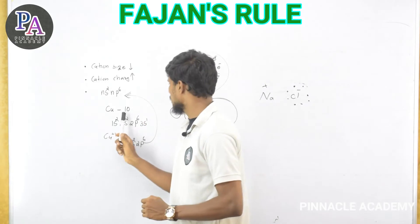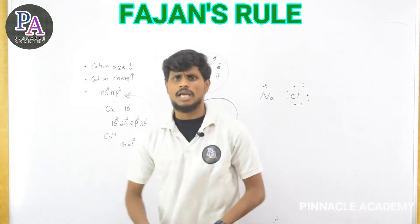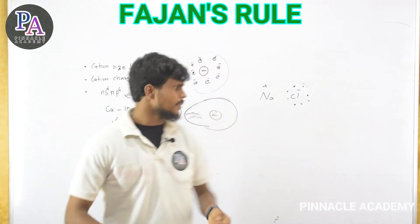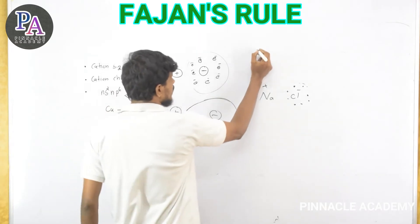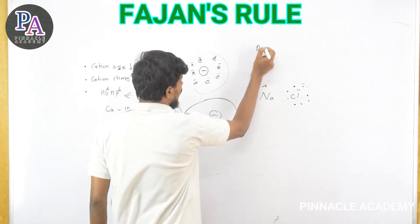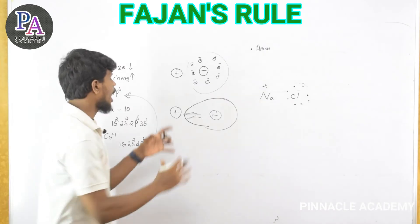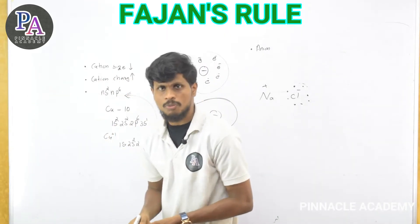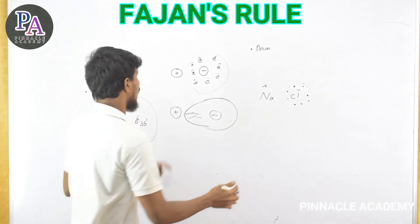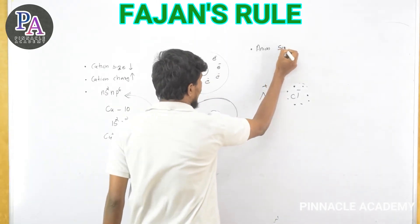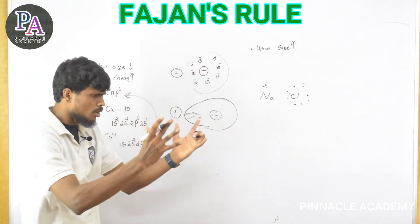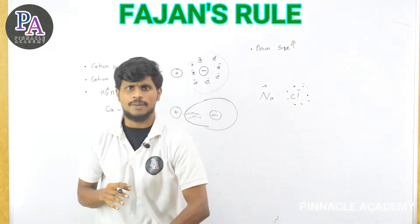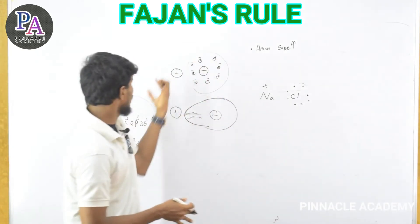When a cation has a noble gas configuration, what happens? We consider the nuclear force of attraction. The nucleus exerts a force of attraction on the surrounding electron cloud. Because of the size of the cation, the electrons experience a shift in energy — the electron cloud is pulled and distorted.